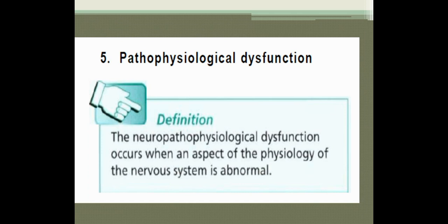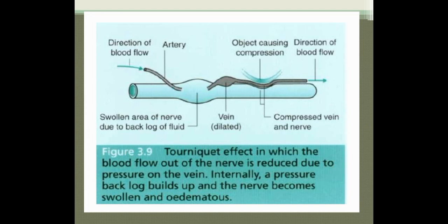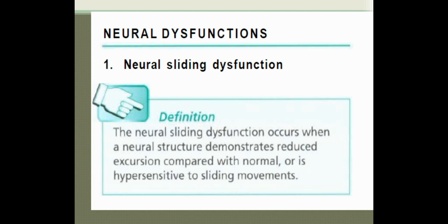Pathophysiological dysfunction occurs when an aspect of the physiology of the nervous system is abnormal. This picture shows the tourniquet effect, in which blood flow out of the nerve is reduced due to pressure on the vein. Internally a pressure backlog builds up and the nerve becomes swollen and edematous. We can see the direction of blood flow, the artery, and a swollen area of nerve due to backlog of fluid and a dilated vein — this is the tourniquet effect. Because of some compression, the direction of blood flow is altered and neurological dysfunction may develop.